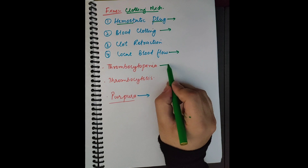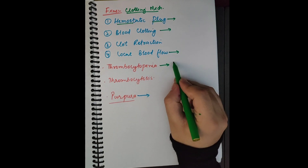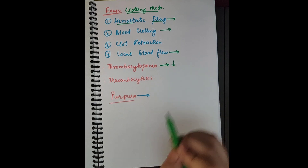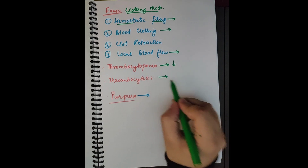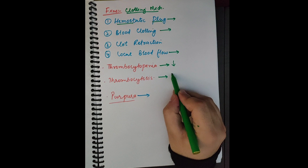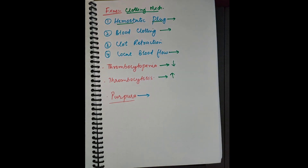Two important terms: thrombocytopenia is decreased platelet count, and thrombocytosis is increased platelet count. When the platelet count increases it is called thrombocytosis, and when platelet count decreases it is called thrombocytopenia.